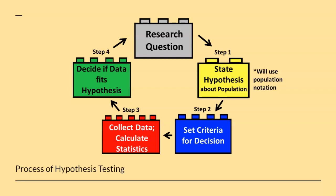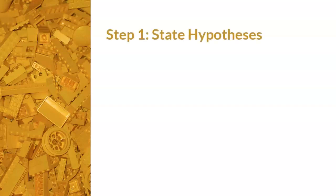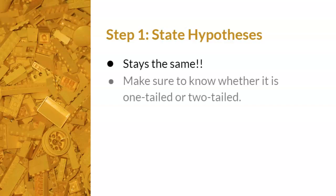You've seen this diagram multiple times before. This diagram illustrates the process of hypothesis testing. We will use the same four steps in conducting a t-test, with some modifications along the way. Step one, the yellow lego, is to state hypotheses. This step stays the same. This is also a friendly reminder to make sure to know whether you need to conduct a one-tailed or two-tailed test. The hypotheses should reflect what type of test you are conducting.